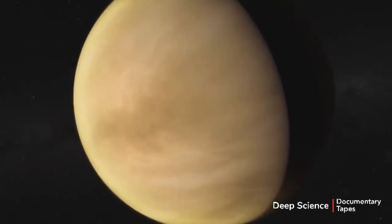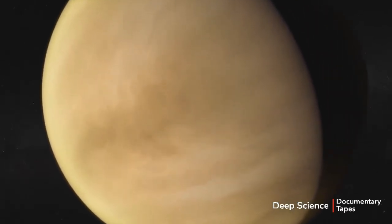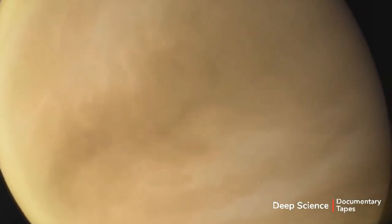The surface of Venus is completely inhospitable for life. Barren, dry, crushed under an atmosphere about 90 times the pressure of Earth's, and roasted by temperatures two times hotter than an oven. But was it always that way?